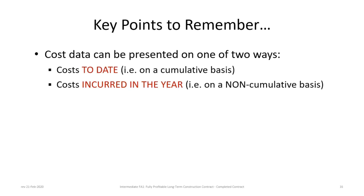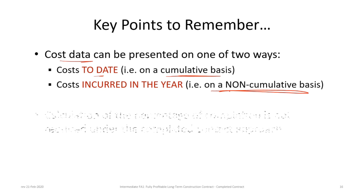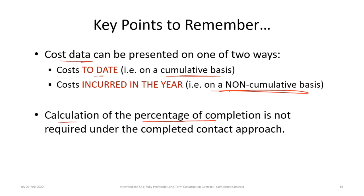Third, as a recap of how data can be presented — shown in Tutorial 8 and repeated here — cost data can be presented on a cumulative basis (cost to date) or on a non-cumulative basis (costs incurred in the year). In either case, some simple math is required. If given data on a non-cumulative basis, you'll need to add costs to derive the cost to date in order to calculate gross profit. Finally, calculation of the percentage complete is not required under the completed contract approach, so you do not need to worry about it.